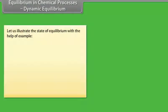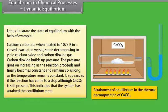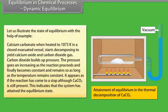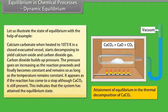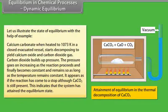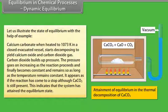To illustrate equilibrium: when calcium carbonate is heated to 1073 Kelvin in a closed evacuated vessel, it decomposes to yield calcium oxide and carbon dioxide gas. The CO₂ pressure increases as the reaction proceeds and finally becomes constant, remaining so as long as temperature is constant. It appears as if the reaction has stopped, although CaCO₃ is still present, indicating the system has attained equilibrium.